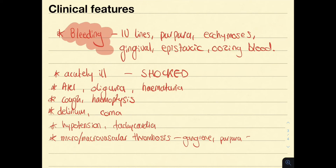Clinical features to be aware of include: AKI, oliguria, hematuria, cough, hemoptysis, delirium, coma, hypertension, tachycardia, thrombi causing gangrene, and patients can also be septic if that is the cause of the DIC. This is not an exhaustive list — there are many other clinical features, and it really depends on the clinical scenario.